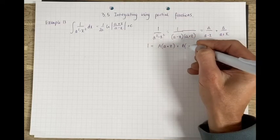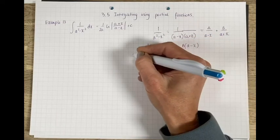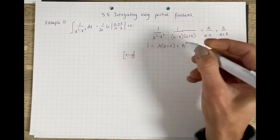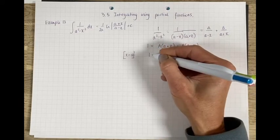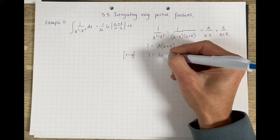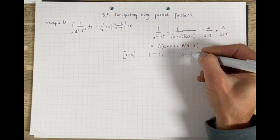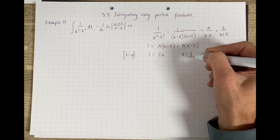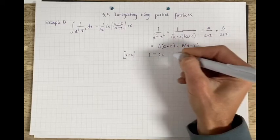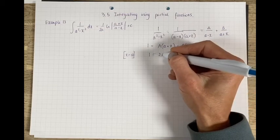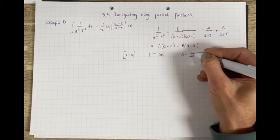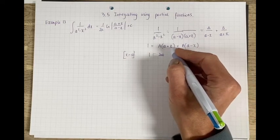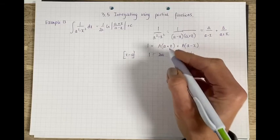Consider x equal to a first. Then you've got 1 on the left-hand side and you've got 2a, so A is equal to a half, 1 over 2a. If you make x into a, it's a plus a, which is 2a, little a times big A.